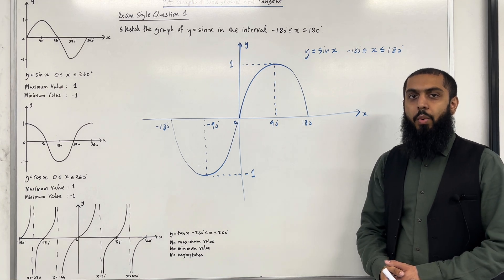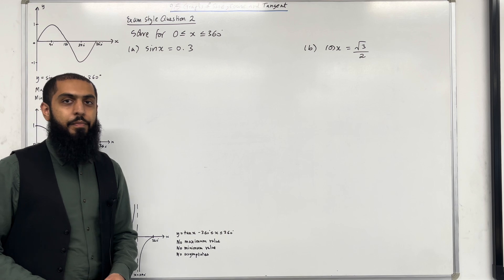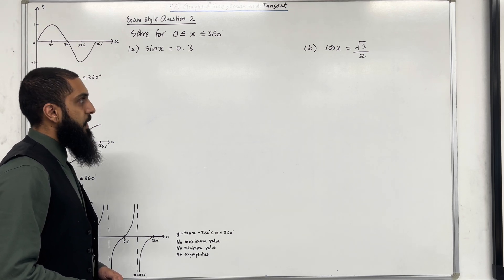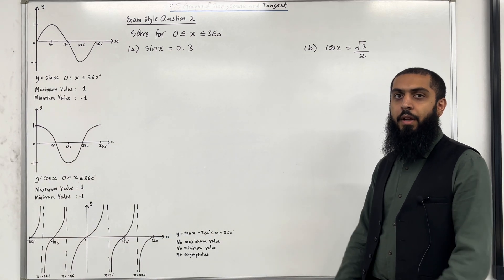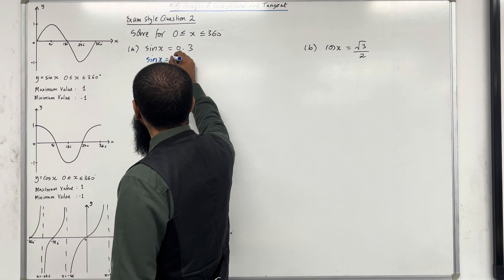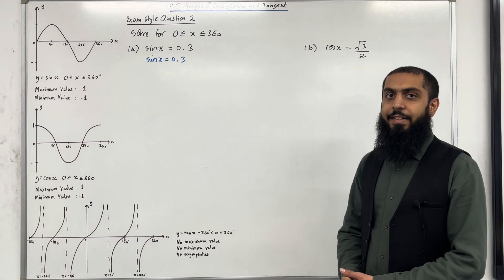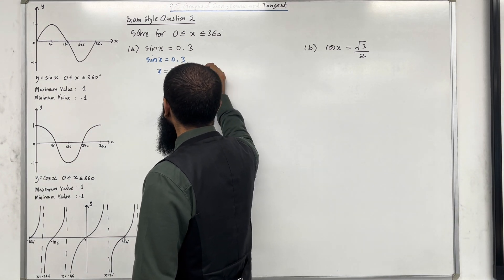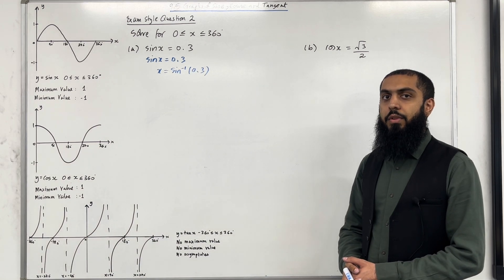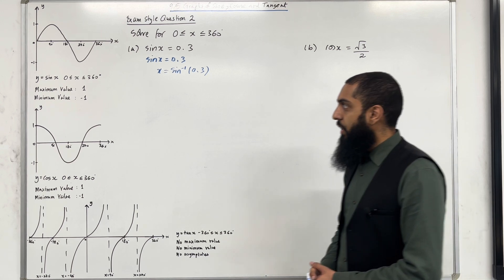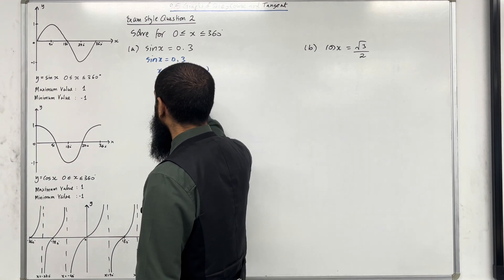This completes exam style question 1. Moving on to exam style question 2: solve for x between 0 degrees and 360 degrees inclusive. Part a: sin x equals 0.3. To find x I need to take sin inverse of 0.3. The solution obtained directly from the calculator is called the principal solution, which to one decimal place is 17.5 degrees.